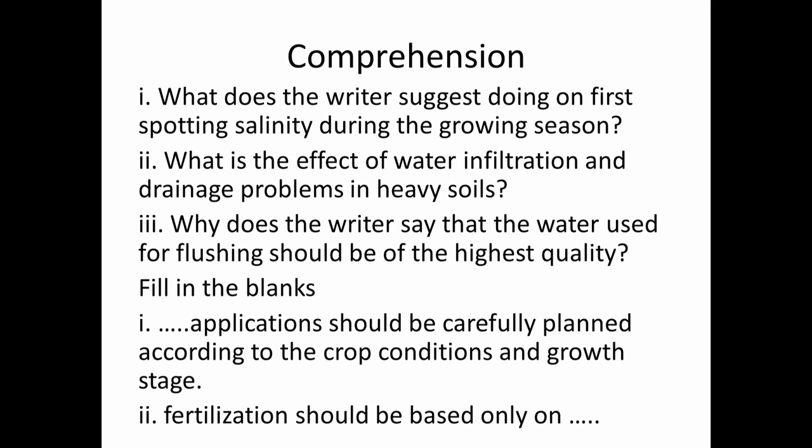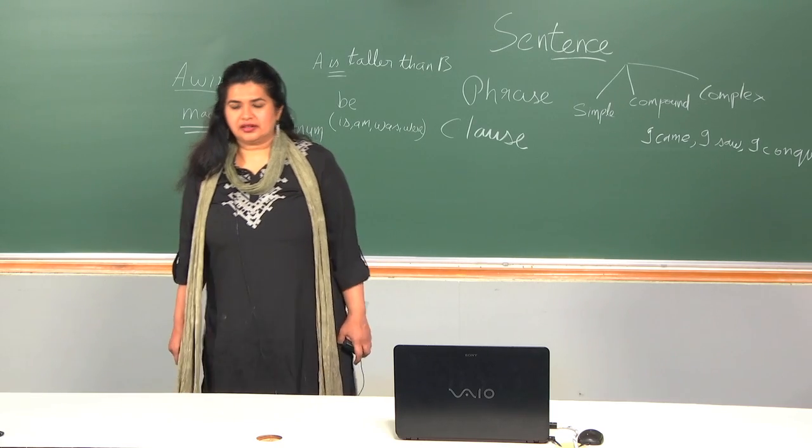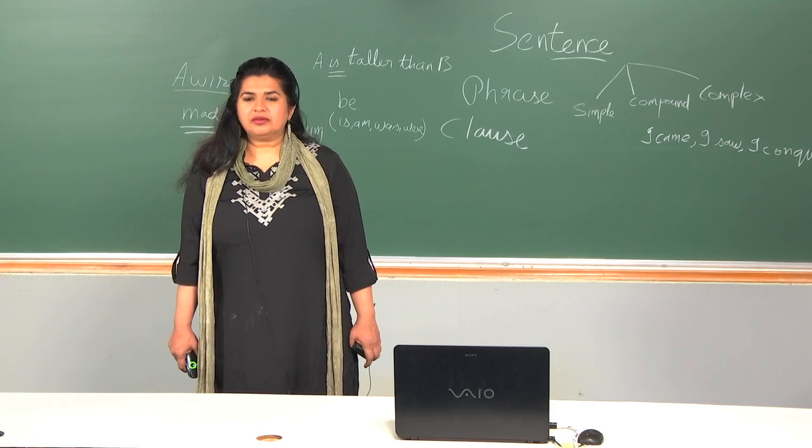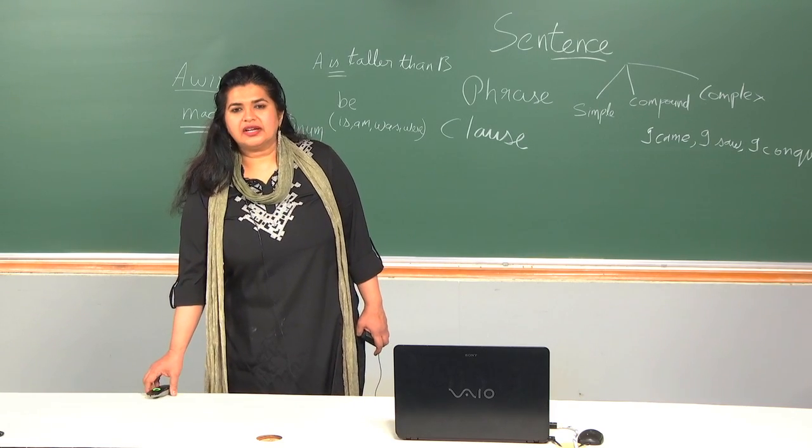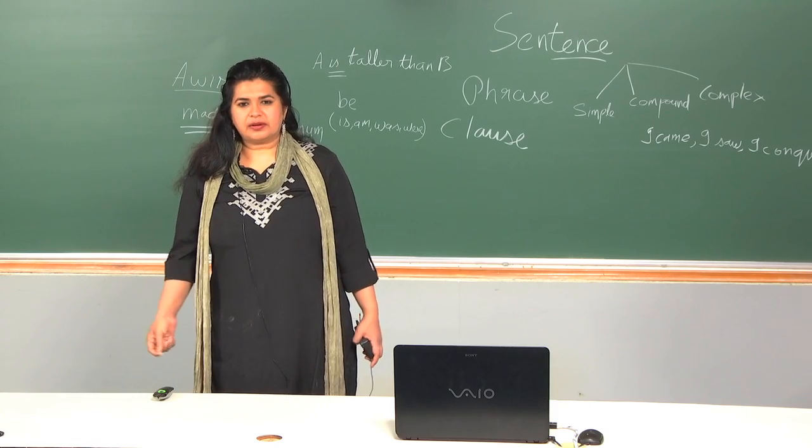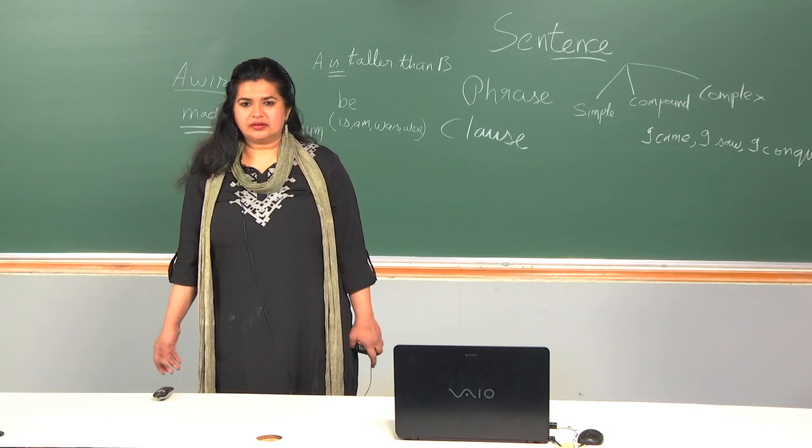Please look at these questions. First question: what does the writer suggest doing on first spotting salinity during the growing season? Second: what is the effect of water infiltration and drainage problems in heavy soils? Third question: why does the writer say that the water used for flushing should be of the highest quality? And also fill in the blanks: 'Dash applications should be carefully planned according to the crop conditions and growth stage.' 'Fertilization should be based only on dash.' Please read the passage and try to solve the exercises given below. Thank you very much, and before winding up let me tell you that after the end of each module there will be assignments, and you are expected to submit the assignments online. Thank you very much.